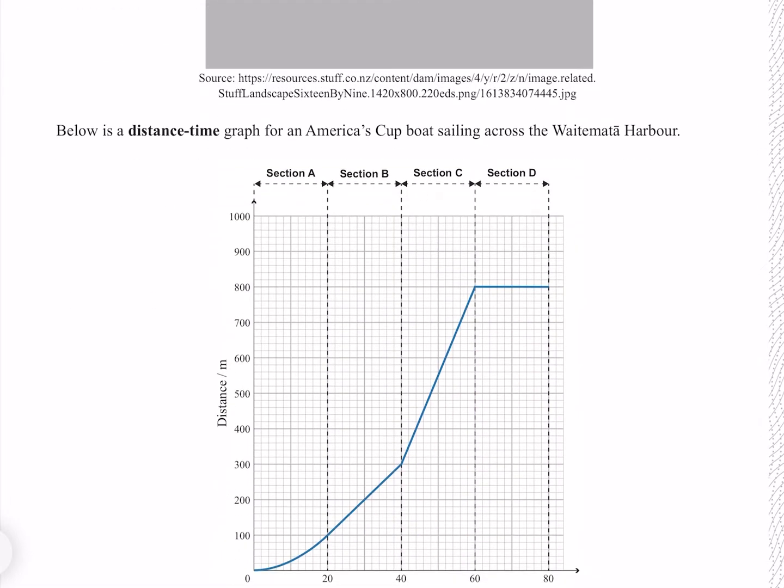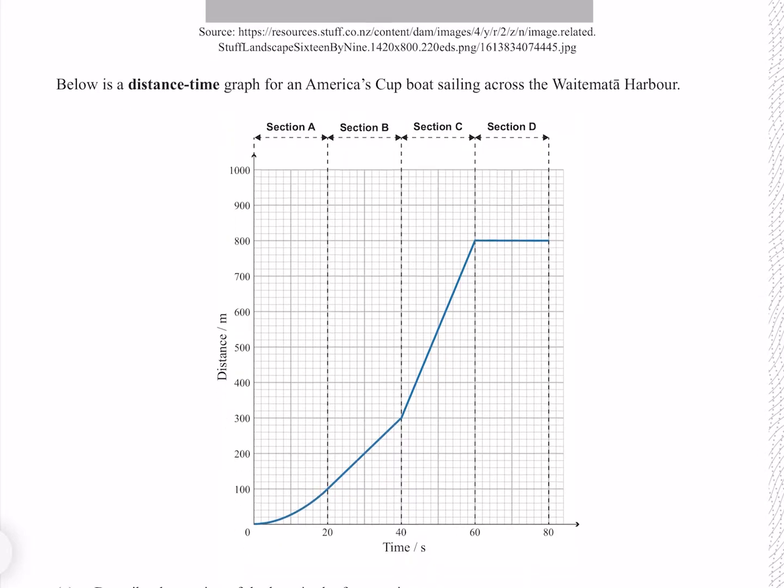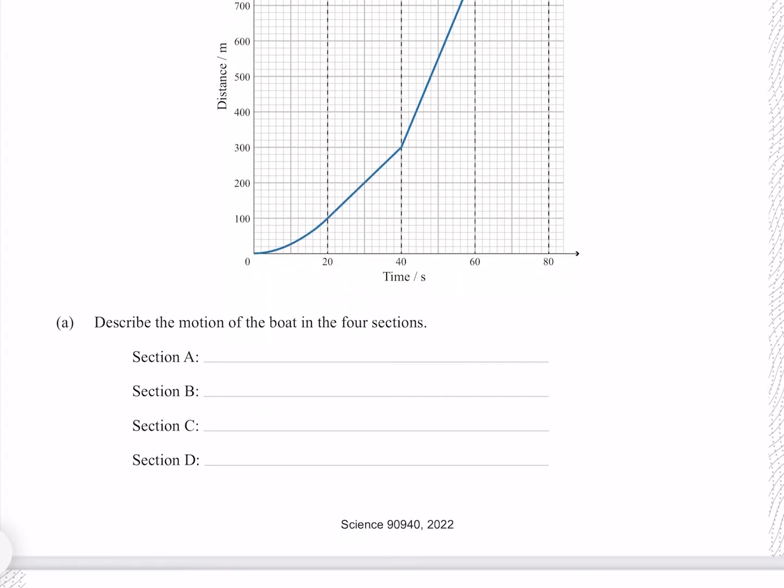Below is a distance-time graph for an America's Cup boat sailing across Waitemata Harbour. Describe the motion of the boat in the four sections. In section A we see a curved line where our slope is getting steeper and steeper, indicating that the velocity is increasing, which means that our boat is accelerating.